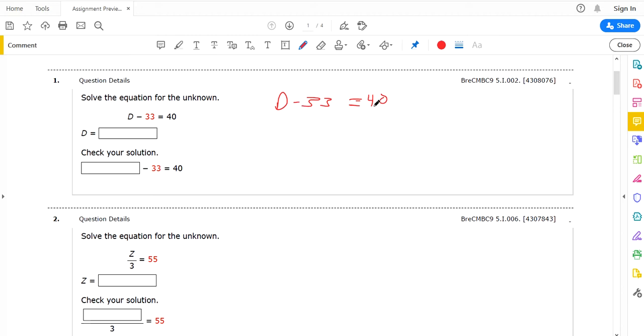You get D minus 33 equals 40. To get D by itself, what you do is opposite operations to the other numbers to make them disappear. It's like rearranging the equation. So the opposite operation of subtraction is addition. And we have to do that once to each side to keep the equation balanced.